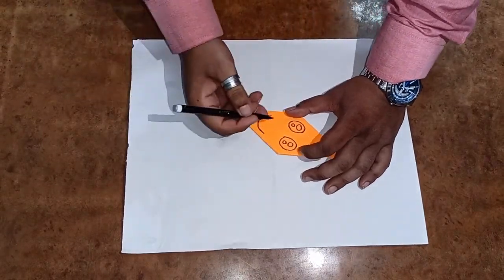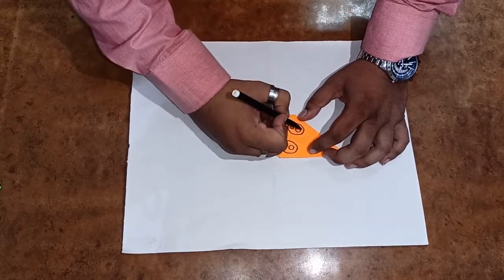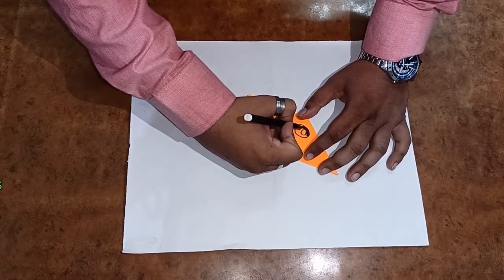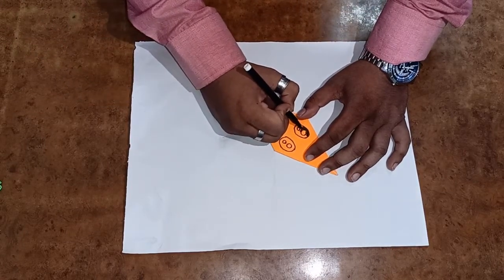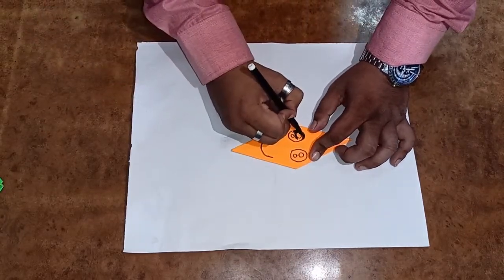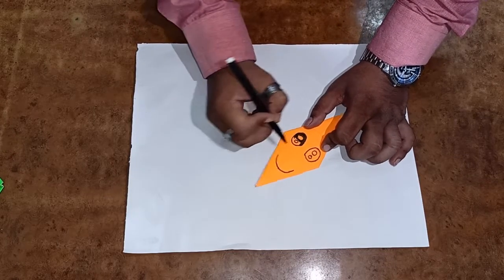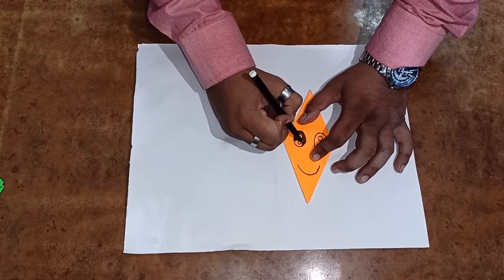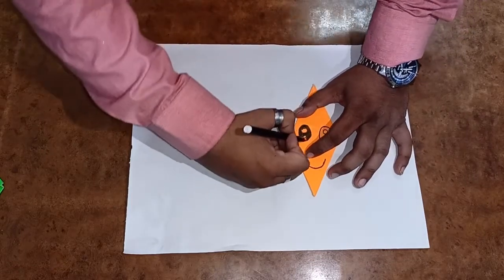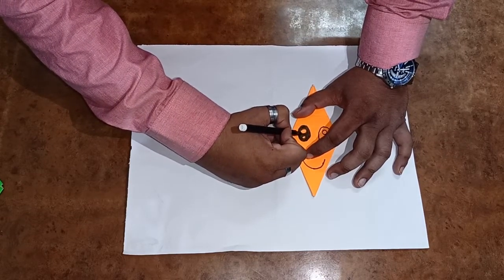Now students, what you have to do, you have to fill these areas of eyes with black sketch pen. See how I am doing? Don't go outside the border. Color it very carefully. Don't color these two parts. This is the eye of a carrot.